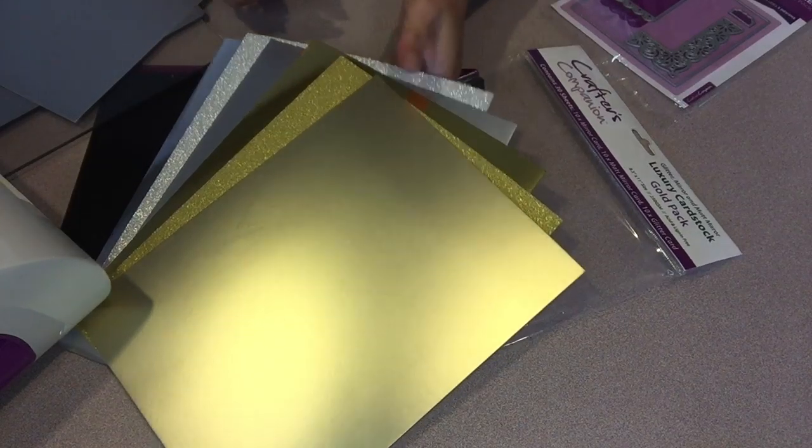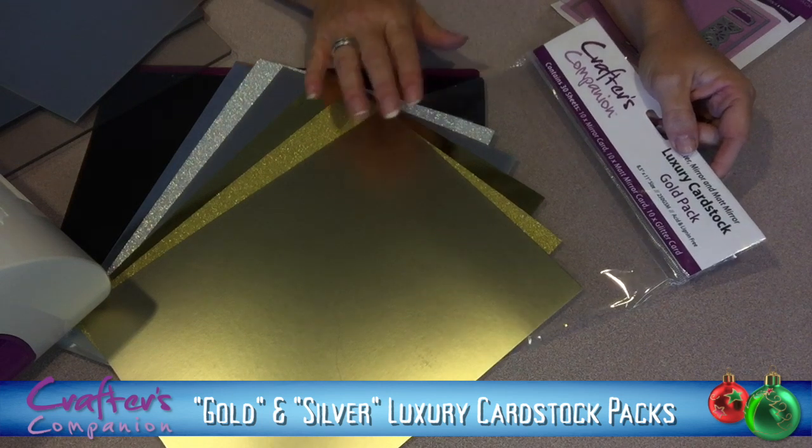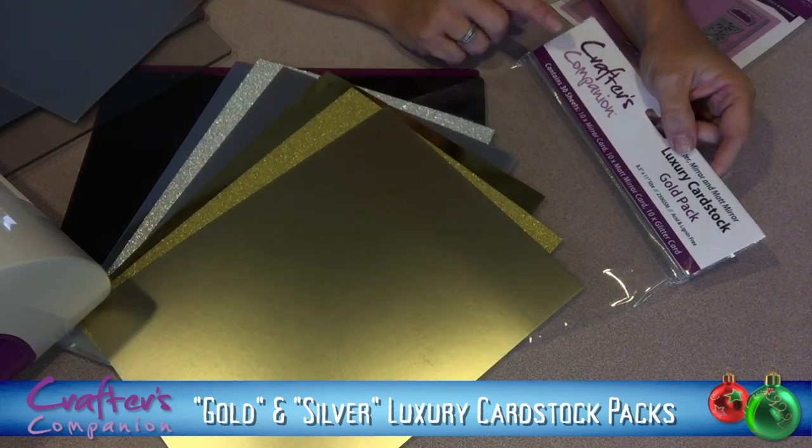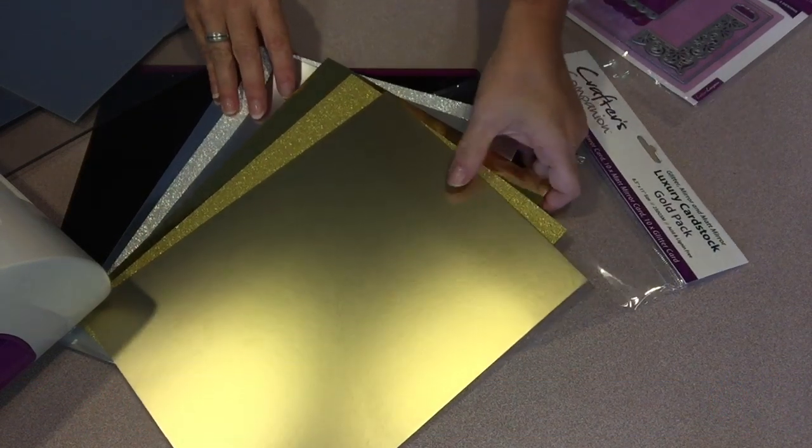To make the mat and embellish the mat, I'm using Crafters Companion's Luxury Cardstock. I'm using a gold and a silver pack, and there's a glitter paper and a matte shine and then a beautiful mirror tone.